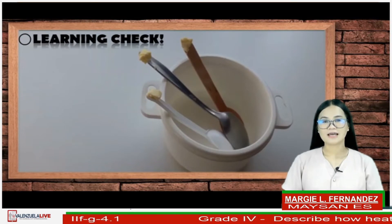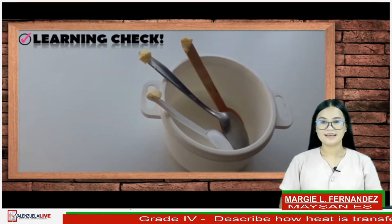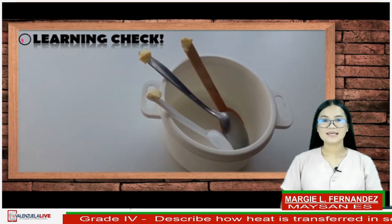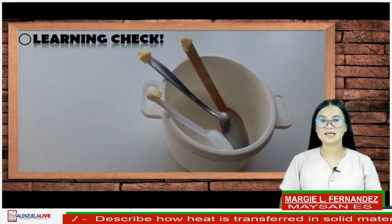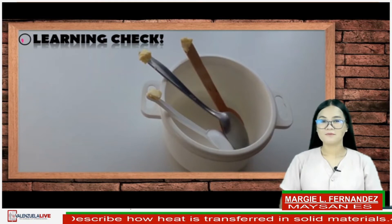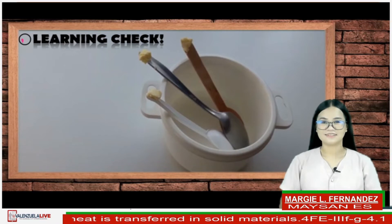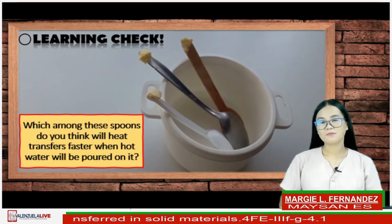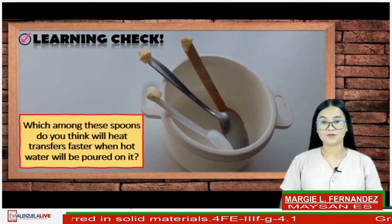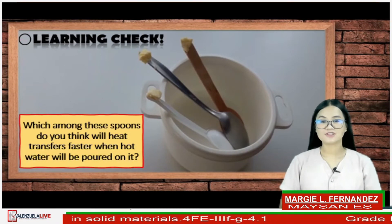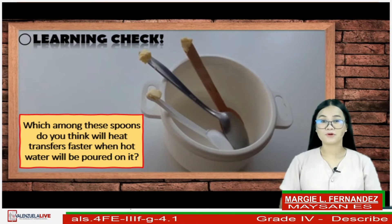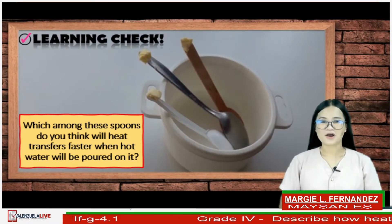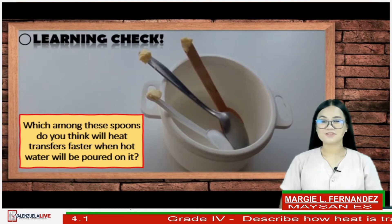There are three types of spoons shown: a metal spoon, a plastic spoon, and a wooden spoon — each with a pinch of butter placed on the spoon's handle. Which among these spoons do you think will transfer heat faster when hot water is poured on it? Please comment your answers below.